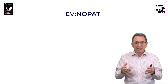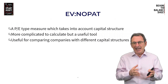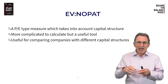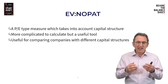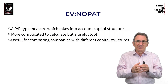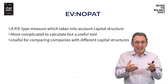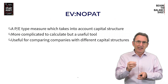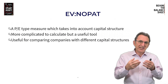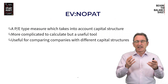EV to NOPAT is a very popular measure, and this effectively is the same as a PE, but it's taking the capital structure out of the equation. It's slightly more complicated to calculate, but it's a very useful tool, especially if you're comparing two companies with different capital structures. NOPAT is simply the operating profit of the business, or the EBIT, and you take off the tax — you apply the company's tax rate to the operating profit, and that gives you the NOPAT.